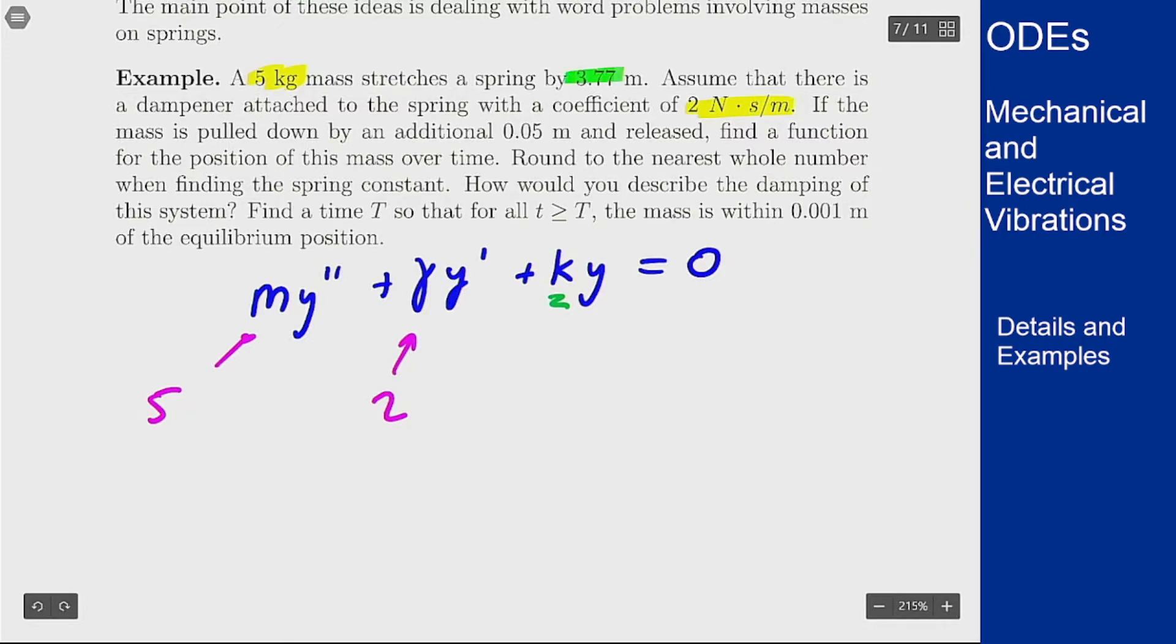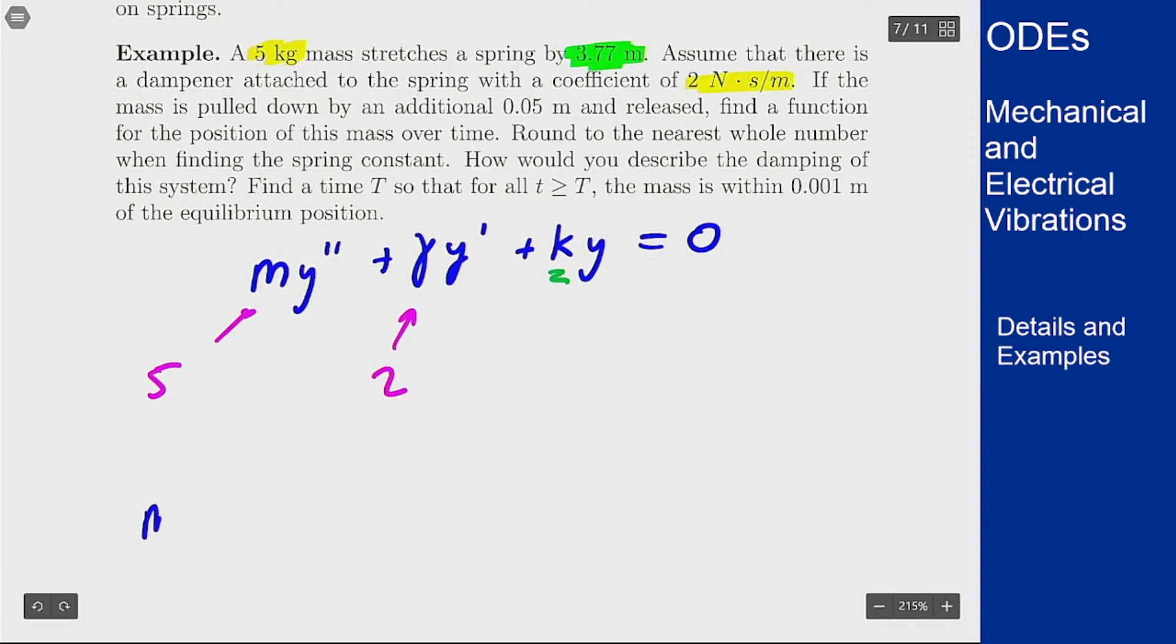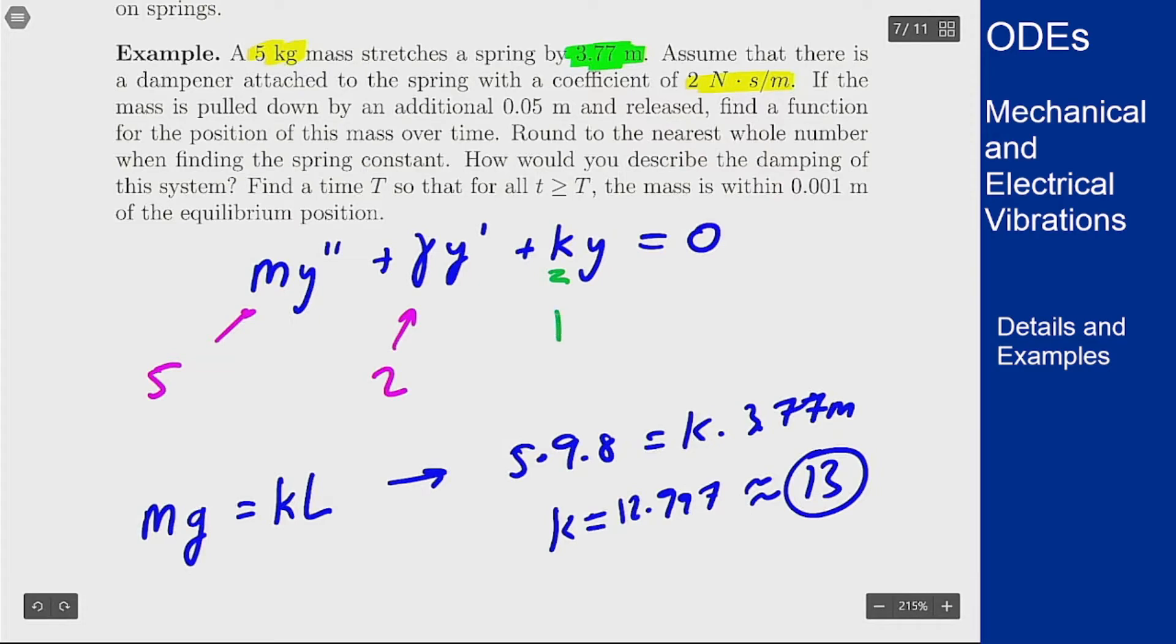That is actually hidden in this information here about how far this mass will pull down this spring. When the spring itself is at equilibrium, the force pulling down is the same as the force of the spring pulling it back up. We need to have that mass times gravity equals the spring constant times L, the length of the extension. We can solve this to get that 5 times 9.8 meters per second squared equals k times 3.77 meters and this comes out to about 12.997 or rounded comes out to 13. So we'll use 13 here for this problem.